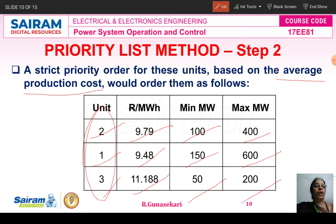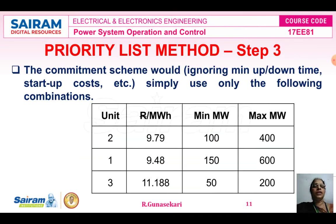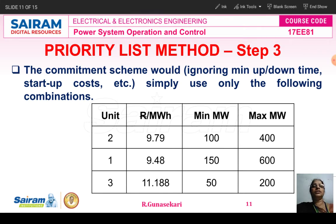Step one: calculate the full load average production cost for the given number of units. Step two: prepare the priority order based on the average production cost. Step three: prepare the combinations — that is, the number of combinations used for meeting the load demand.